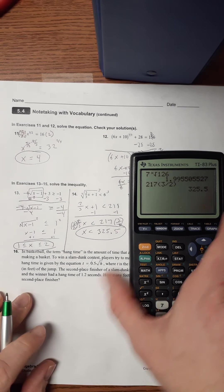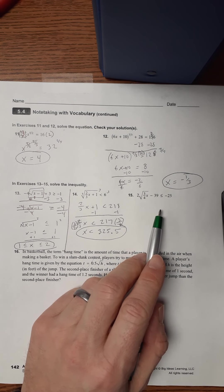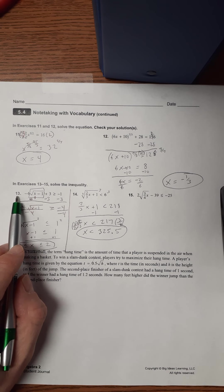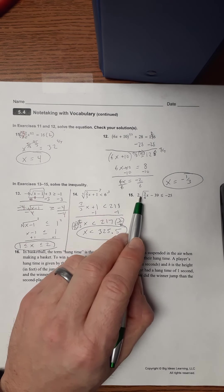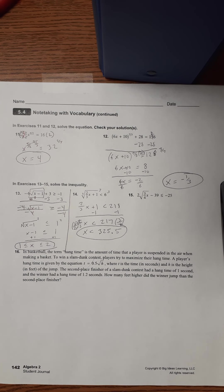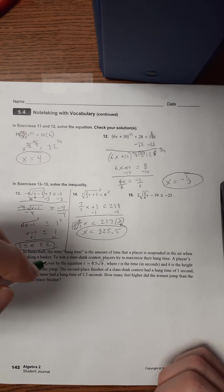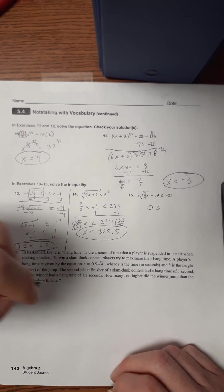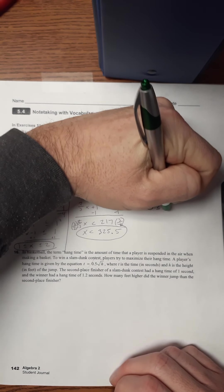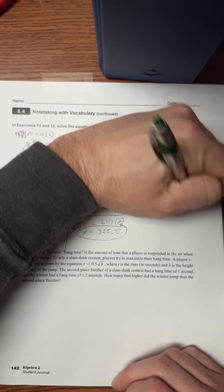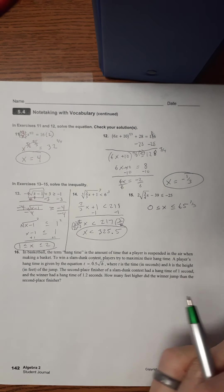Number 15 is one that I want you to work on on your own. That should be very similar to number 13 in that it's a square root here. So, you're going to have it be a compound inequality. I will tell you right now that this is going to be as an answer 0 is less than or equal to x which is less than or equal to 65 and a third. Very good.